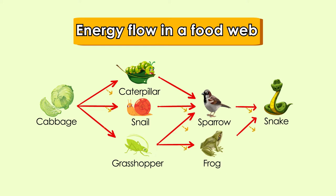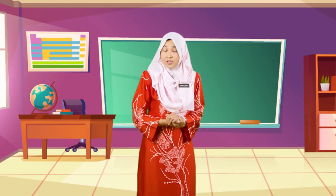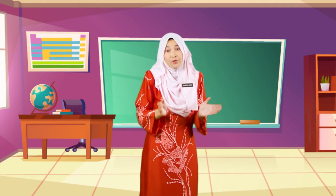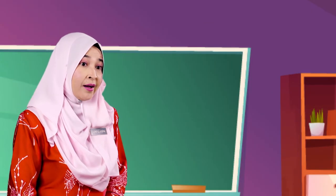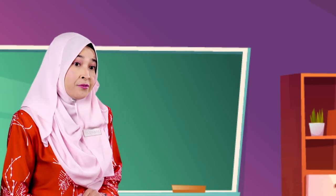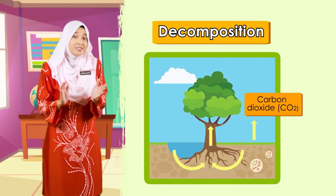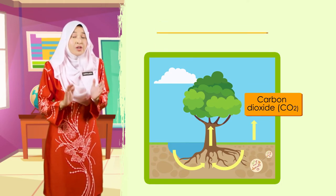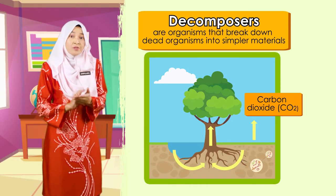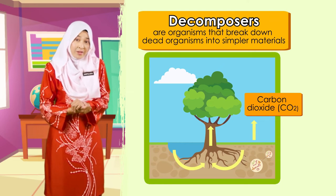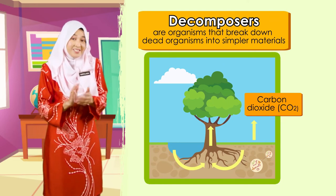However, not all of the energy from the organism is transferred when the organism is eaten. This is because some energy is used by the organism to carry out its life processes such as respiration, excretion, and movement. When living things die, they will be broken down into simpler materials through a process called decomposition. This task is carried out by bacteria and fungi, which are known as decomposers. The interaction by which decomposers feed on dead organisms is called saprophytism.